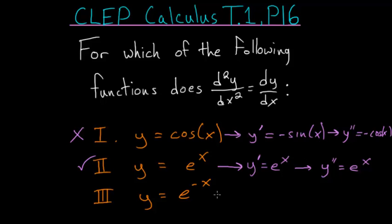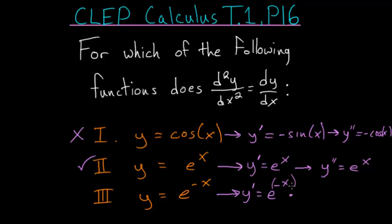Now let's try for e to the minus x. We'll take its first derivative using the chain rule. The derivative of e to anything is just equal to e to that power, and then we multiply by the derivative of the inside function. The derivative of minus x is just negative 1, so we're left with minus e to the minus x.